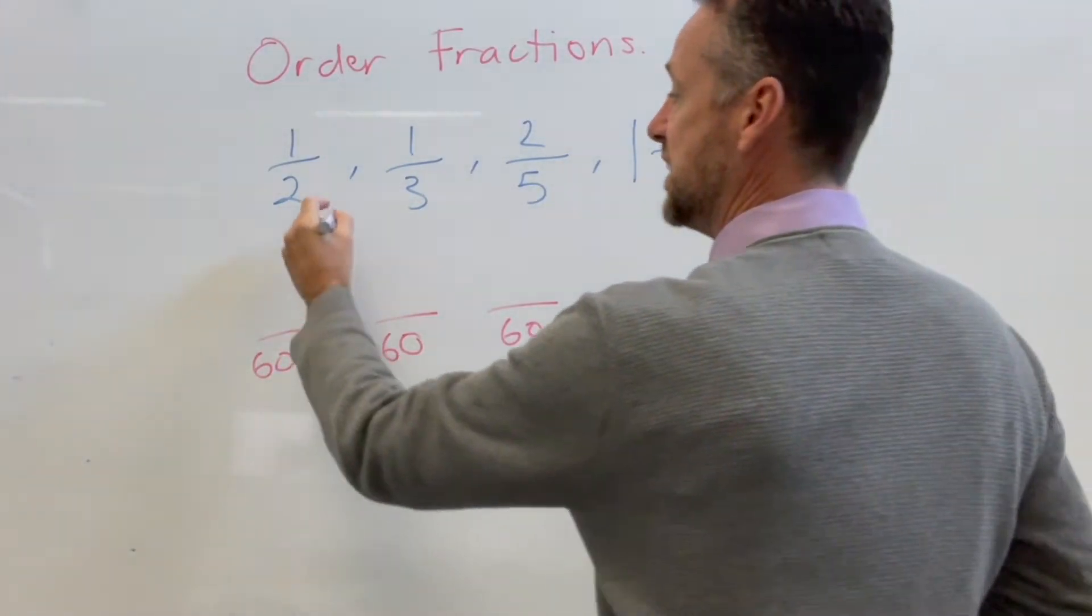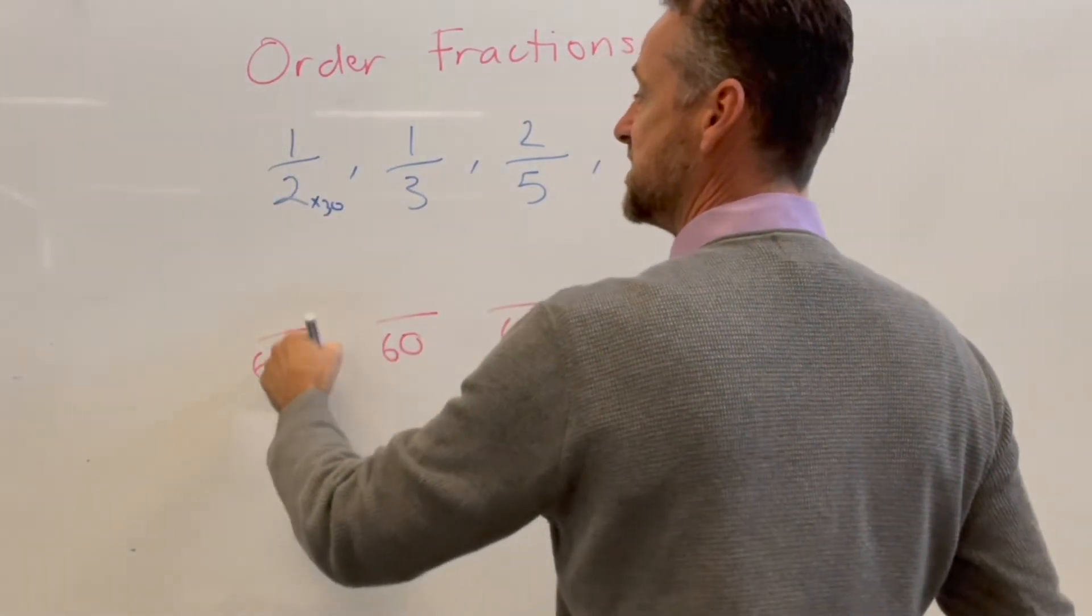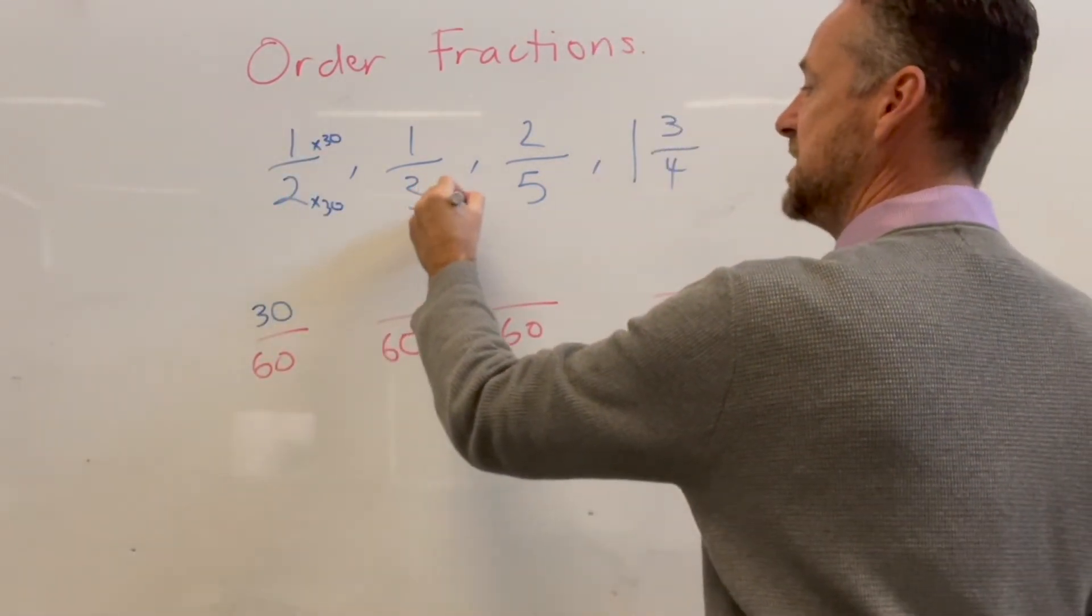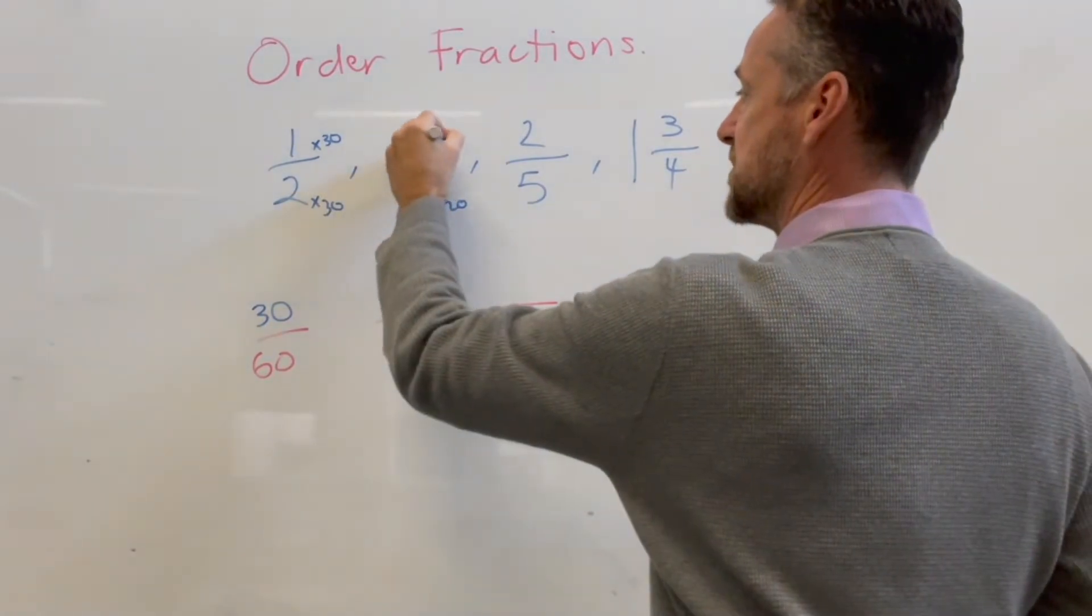So it's times 30 to get to 60 so it's times 30 here so it becomes 30. Here times 20, so it becomes times 20 here.